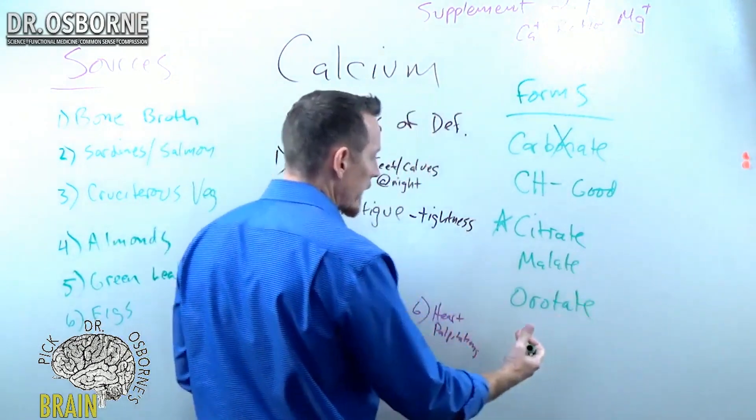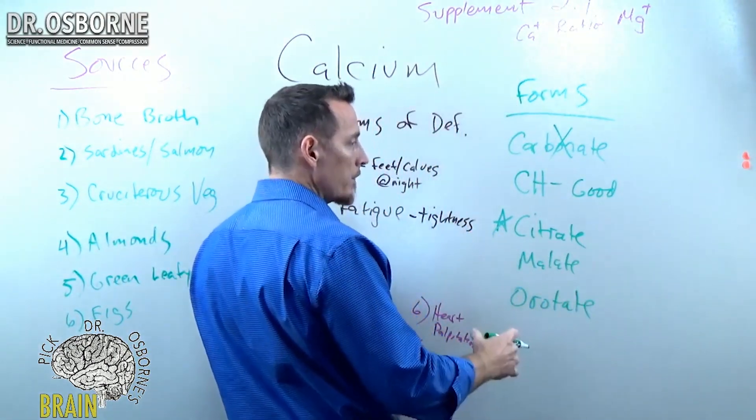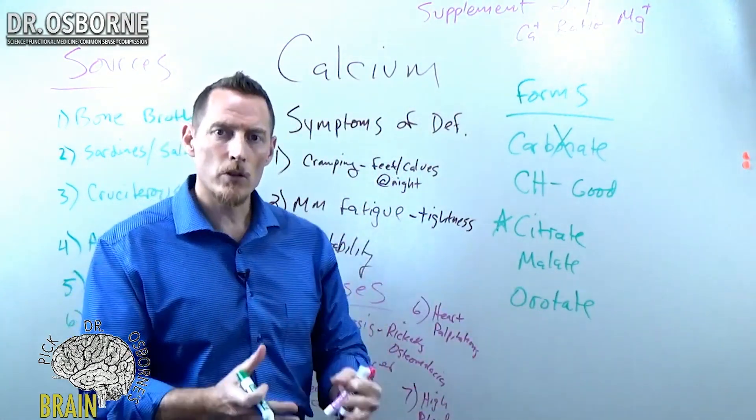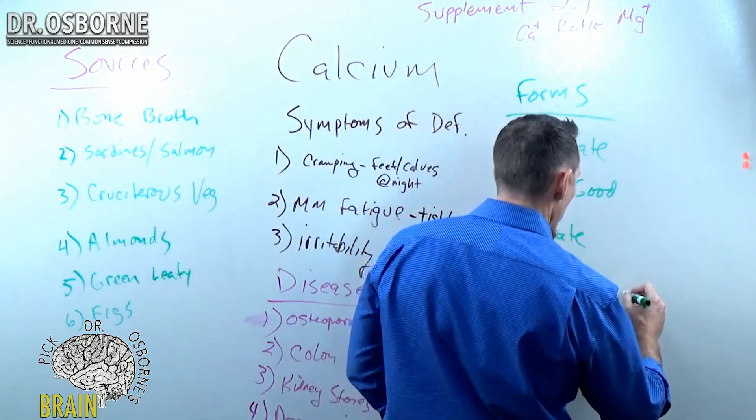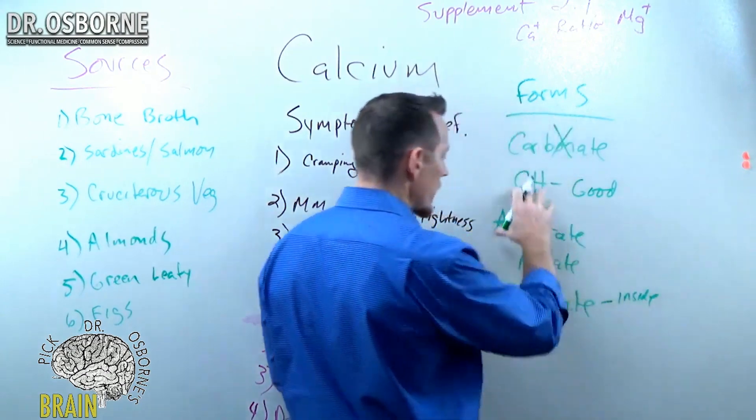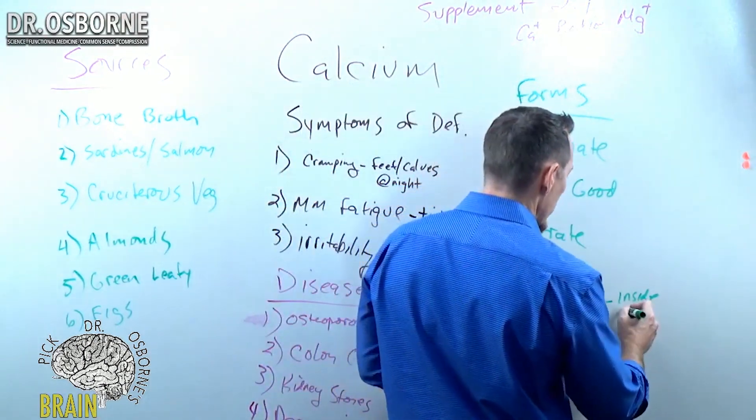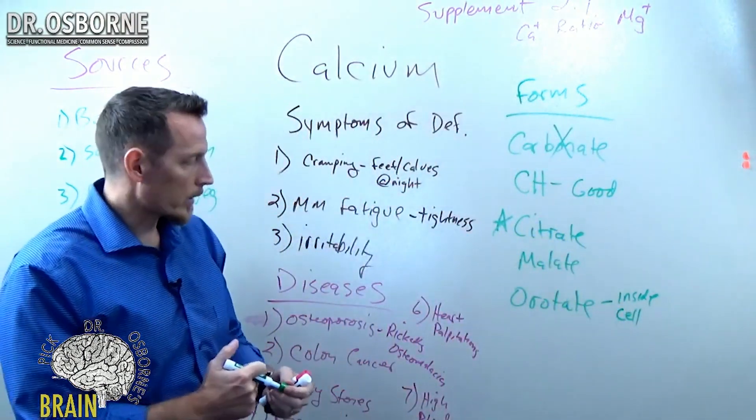Now, if you're talking about intracellular calcium, some research, again, this is not mega-conclusive, meaning there's still research that should probably be done, but calcium orotate is good at getting inside the cell, whereas calcium citrate's good at getting absorbed through the GI tract, getting into your bloodstream. Orotate is really good at getting inside your cells, so intracellular calcium.